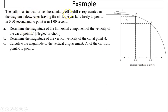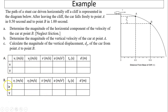Another example. The path of a stunt car driven horizontally off a cliff is shown in the diagram. After leaving the cliff, the car falls freely to point A in 0.5 seconds and to point B in 1.0 seconds. We need to determine the horizontal component of velocity at B, the vertical velocity at B, and the vertical displacement from A to B. I'll make two charts — one for point A with time 0.5 seconds and horizontal distance 8 meters, and one for point B with time 1.0 second and horizontal distance 60 meters.